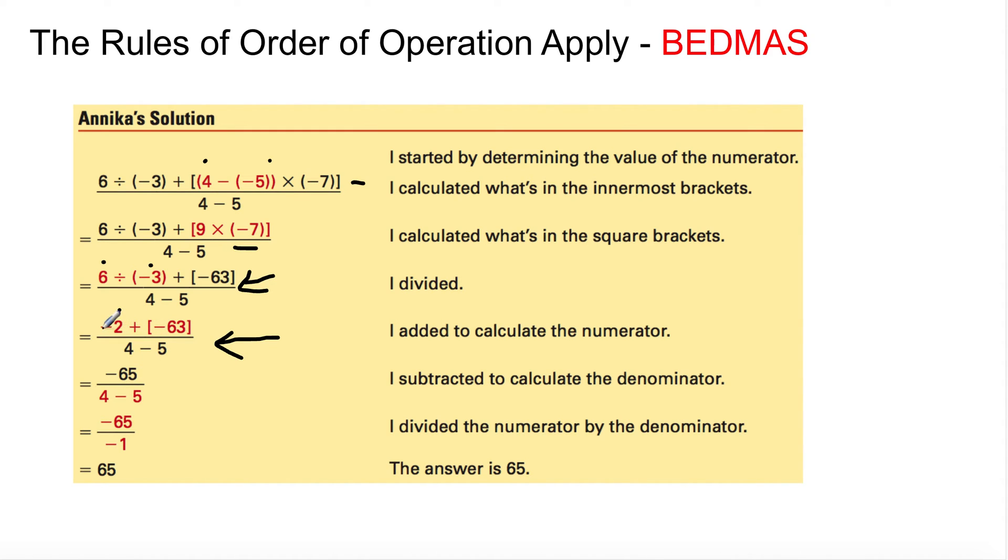So negative 2 plus negative 63 will give you negative 65. Well, what's left? I subtracted to calculate the denominator right here is what's next. 4 minus 5. 4 minus 5, you're left with negative 1.